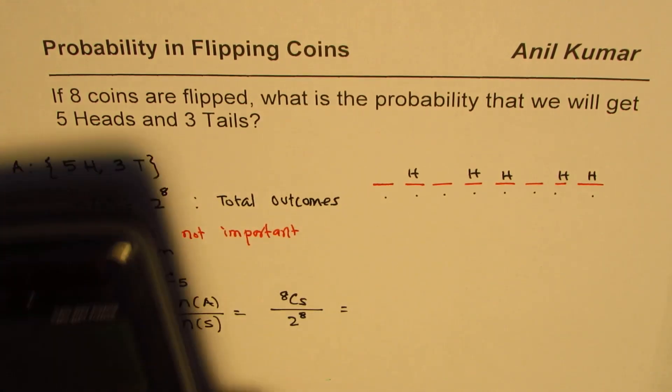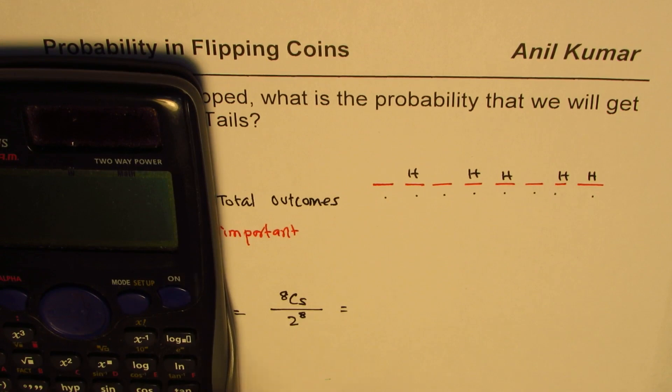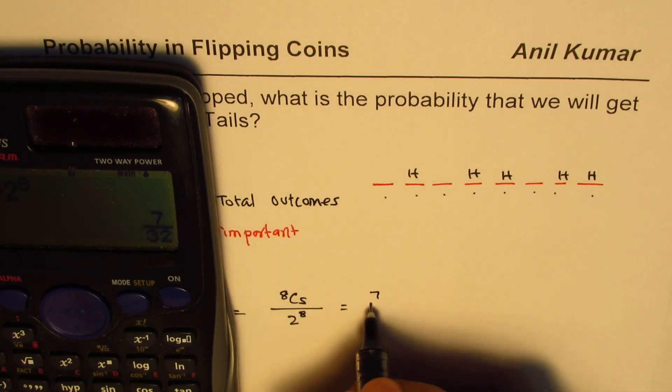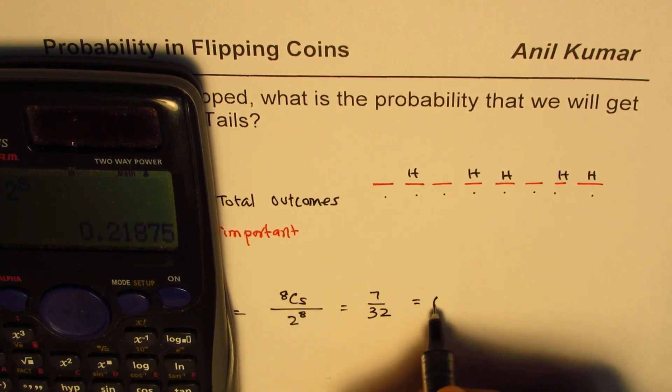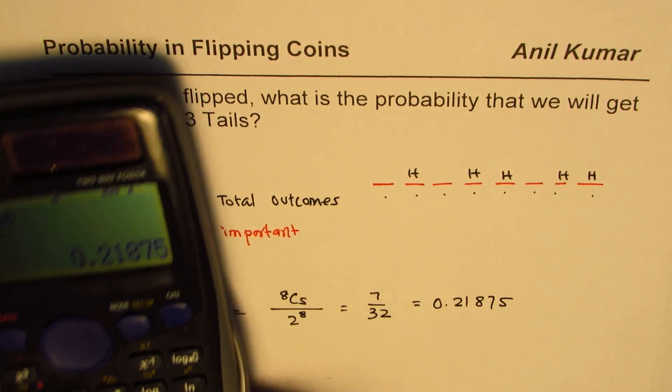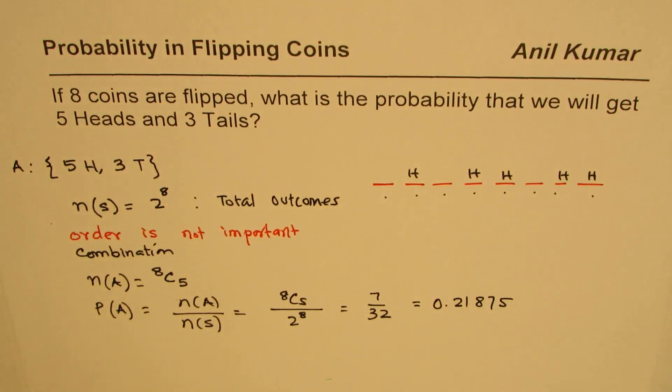So we can always find this answer. So 8C5 divided by 2 to the power of 8. So that gives you 7 over 32. Or in decimals, you could write this as 0.21875. That is how you could get the answer without making a tree diagram, which could be very complicated.